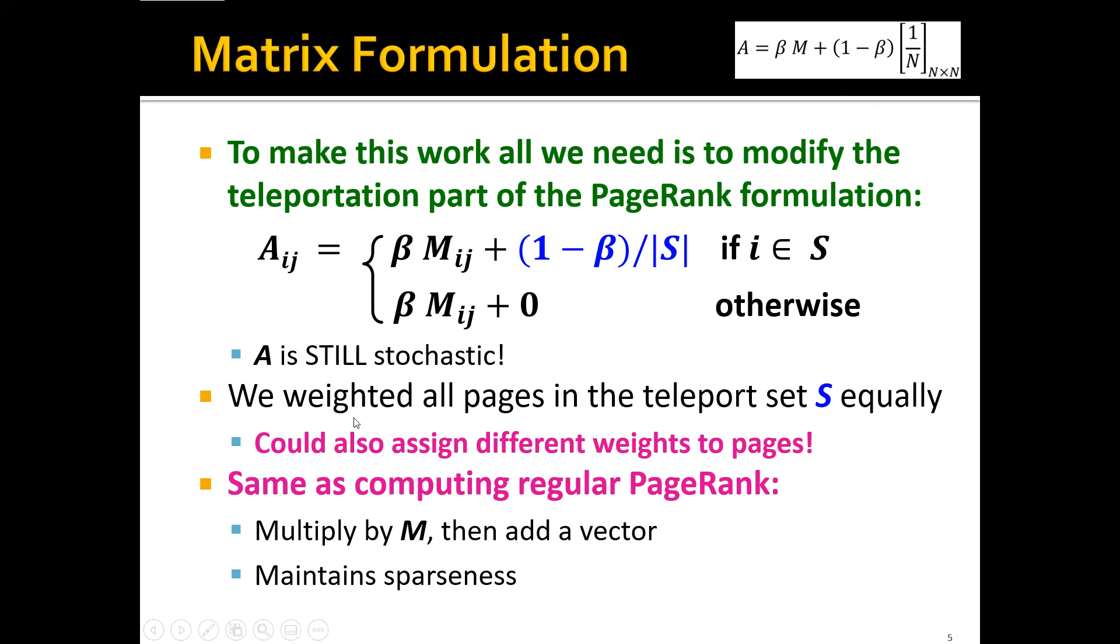And remember, here we actually weighted all the pages in the teleport set equally. But you can actually choose whatever weight you want. You can also assign different weights to different pages in the set. It also works as long as it adds up to be (1 minus beta). And implementation-wise, it's actually the same as computing the regular or standard PageRank. We'll first multiply the PageRank vector by the original matrix M, and then we'll add the vector here. And this is to maintain the sparseness.